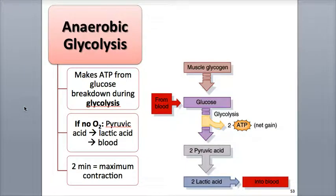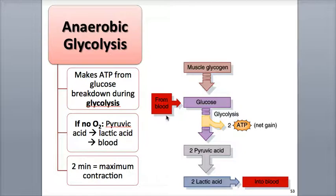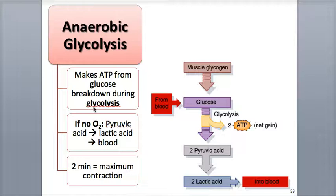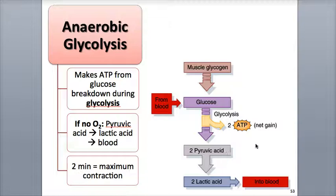As creatine phosphate runs out, the muscle fiber has to have another source of ATP to allow muscle contraction to continue. This next source comes from the monosaccharide sugar glucose, which moves into muscle fibers from the blood by facilitated diffusion. Muscle fibers can also obtain glucose by breaking down the polysaccharide glycogen, which is stored up inside the fibers. The reactions of glycolysis then occur in the sarcoplasm of the muscle fiber, which breaks down one molecule of glucose into two molecules of pyruvate, also called pyruvic acid, and produces a net gain of two molecules of ATP.